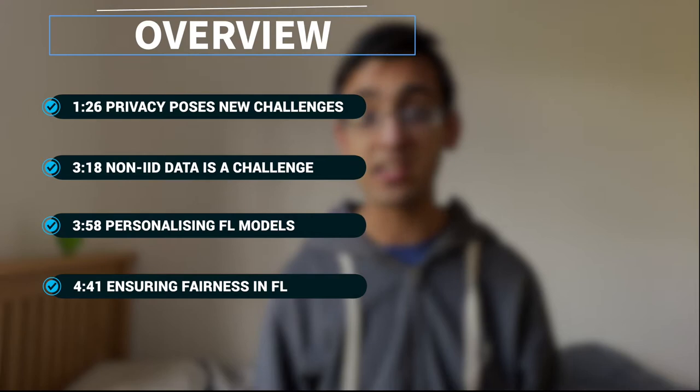There are really two main techniques to preserve privacy: differential privacy and secure aggregation. Differential privacy involves adding carefully selected noise to the outputs to ensure privacy. This can either be done by the individual clients, at the server level, or via a hybrid approach.